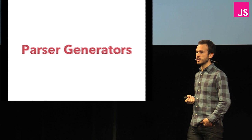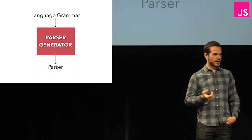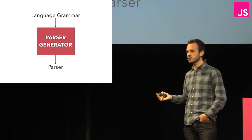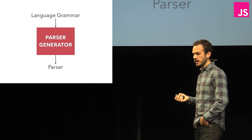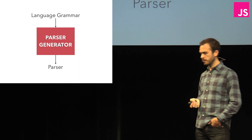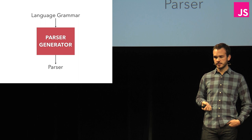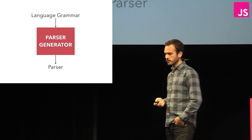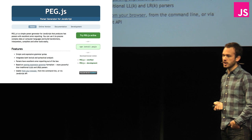A parser generator is basically a thing that takes a language grammar as input — a formal description of a language — and spits out a parser that will parse that language. You've probably heard of some of the more famous parser generators: Yacc, Bison, or for JavaScript, Jison. Today I'm going to show you an example of something called peg.js, which is a slightly different kind of parser generator that uses parsing expression grammars.